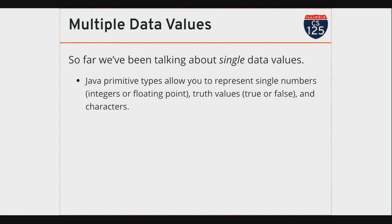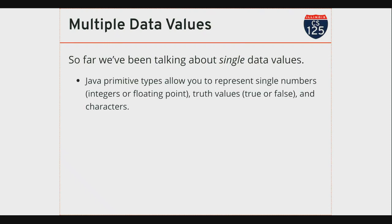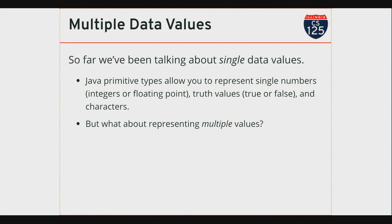So, we're talking about single data values, and Java primitive types allow us to work with those. But let's enrich our vocabulary here. What if I want to work with multiple values? I can create multiple variables — I could create two int variables and give them each a name. But again, that's still really limiting. It gets messy very quickly.